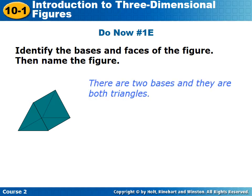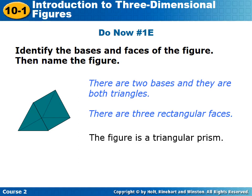We can see that this shape has two bases, and they're both triangles. Those triangles are connected by rectangular faces. That means this is a triangular prism.